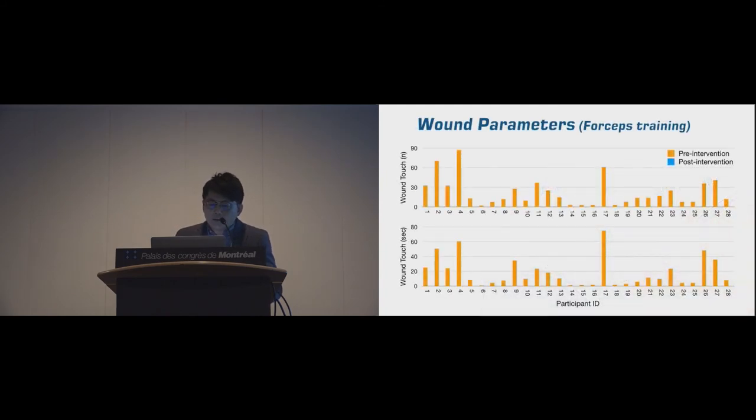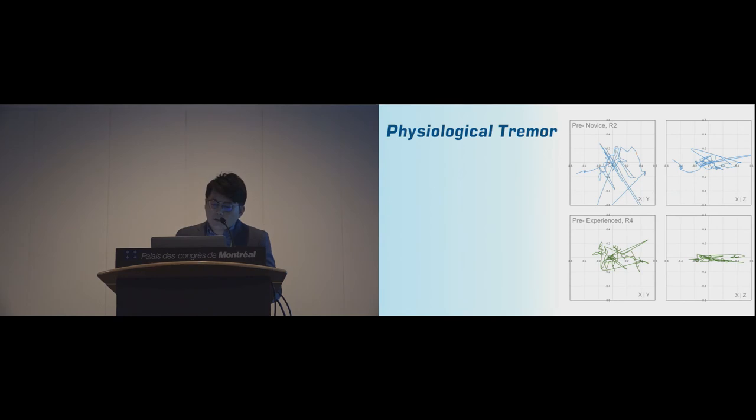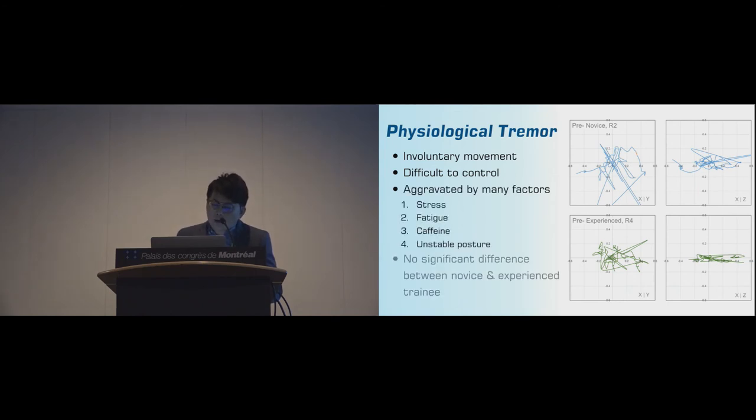Discussion. Today, we don't have any training tools that can actively remind the condition of wound for cataract surgeons. That might be the reason the experienced group did not perform well in wound-related parameters. However, all participants showed significant improvement after practice. Physiological tremor is a kind of involuntary movement which is difficult to control and will be aggravated by stress, fatigue, caffeine, and unstable posture. That's why there's no significant difference between novice and the experienced group in anti-tremor parameters.